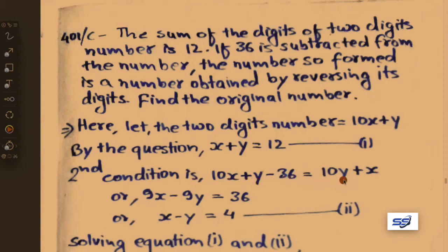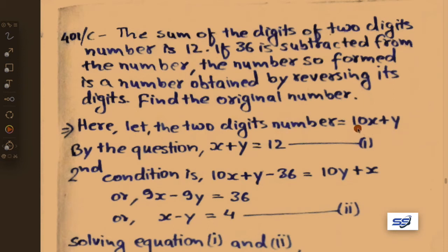From the second condition: if 36 is subtracted from the number, 10x plus y minus 36 equals the number obtained by reversing its digits, which is 10y plus x. So 10x plus y minus 36 equals 10y plus x.